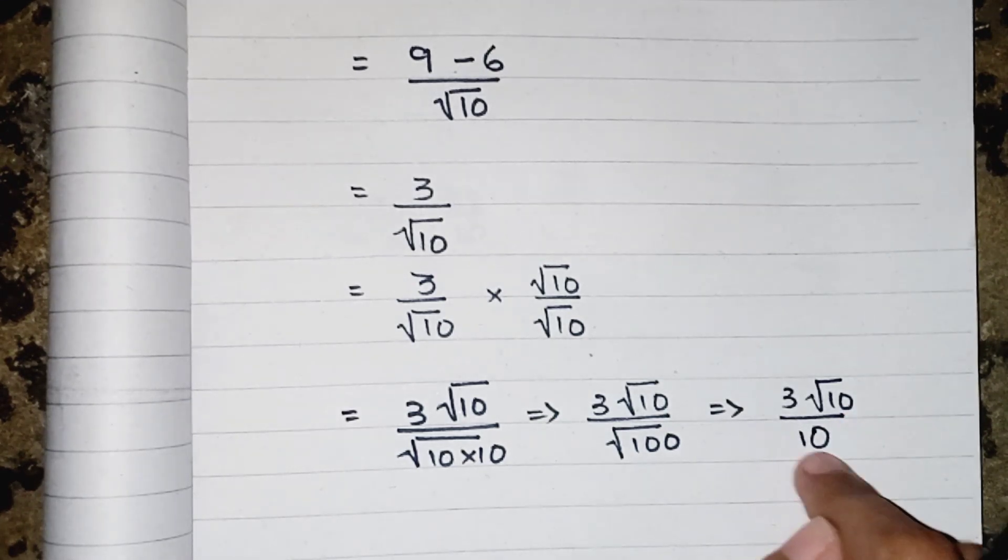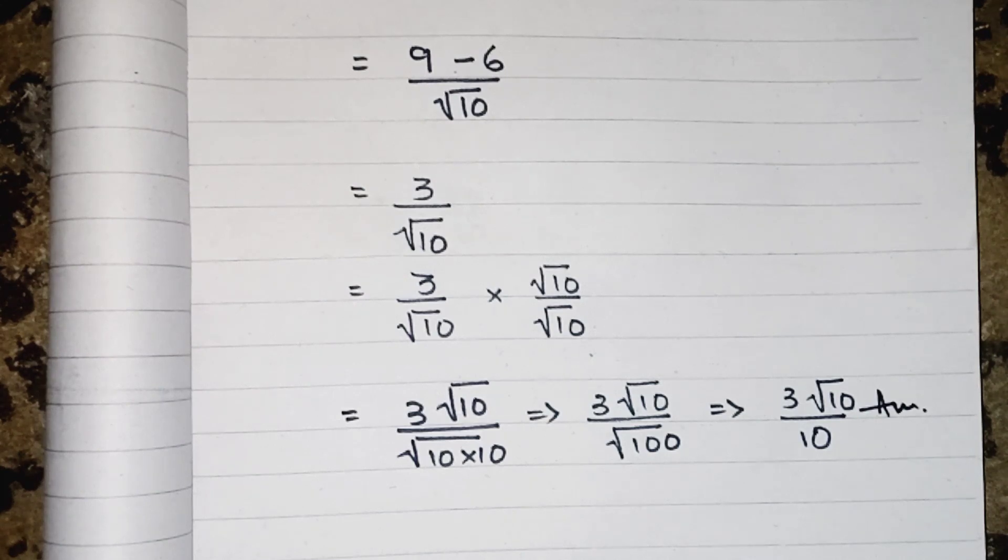If it was a multiple of 3, so we can cancel out both of them. Because 3 and 10 are not multiples, we cannot cancel out them. So this one is our answer. Hope you liked the video, do subscribe to support me. Take care, bye bye.